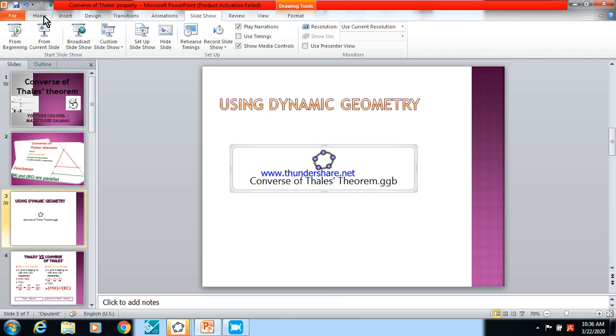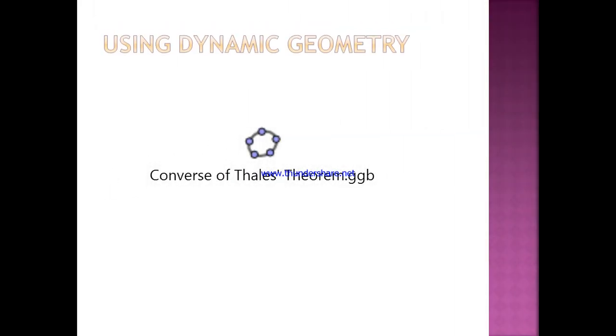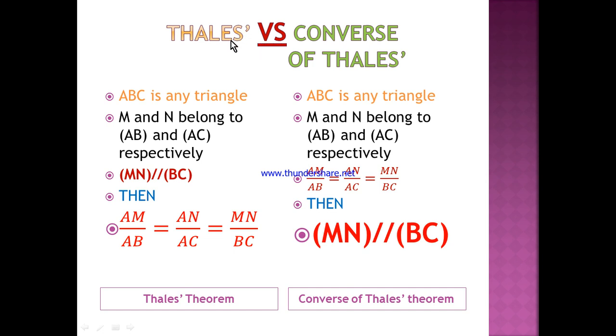Now let me continue my presentation. In this slide, I will show you the difference between Thales and Converse of Thales. In both cases, we have any triangle and M and N are two points on AB and AC. The difference: in Thales, given MN and BC are parallel and we deduce that the ratio of the sides are proportional. In Converse of Thales, we have the ratios are proportional and the conclusion is a geometrical property: MN and BC are parallel. So Thales is used to find a missing segment, missing length, and Converse of Thales is used when we have all the sides and we need to prove a geometric property, that two lines are parallel.